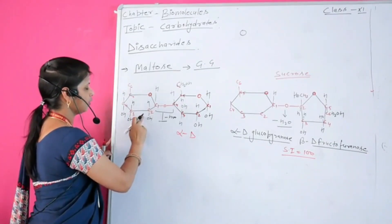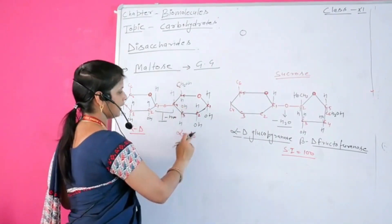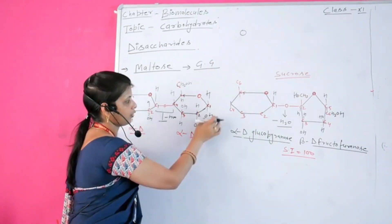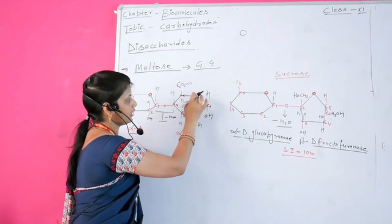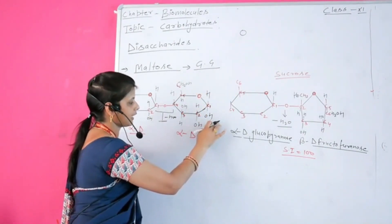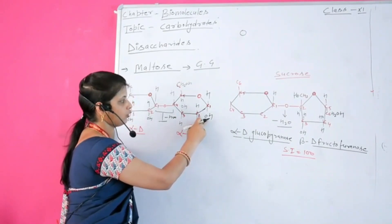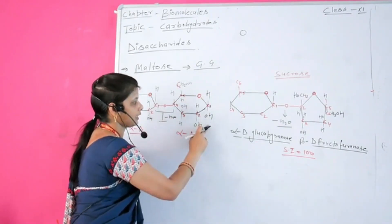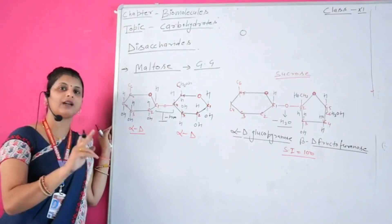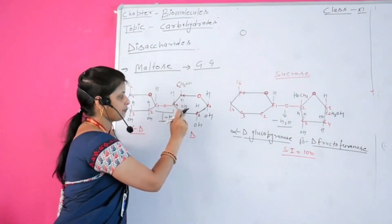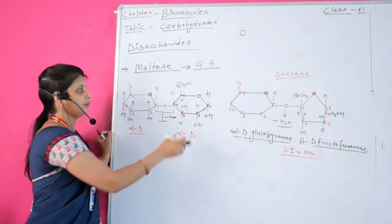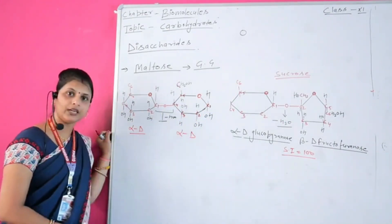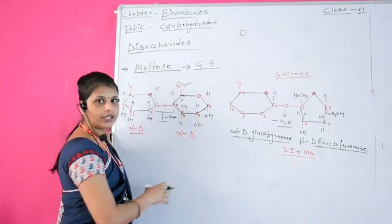This is alpha-D-glucopyranose, and the second unit is also alpha-D-glucopyranose. It is called alpha because when the hydroxyl group near the oxygen is oriented towards the lower side, it is represented as alpha. If the hydroxyl group is oriented towards the upper side near the oxygen, it is represented as beta — that is the main difference between alpha and beta. The pyranose structure has five carbons in the ring along with one oxygen atom, giving it a hexagonal structure.